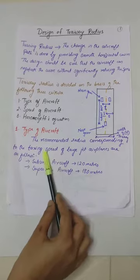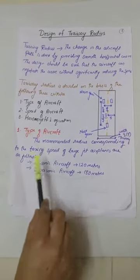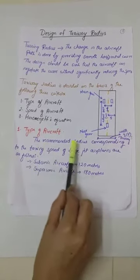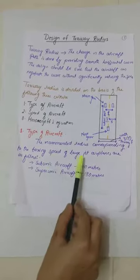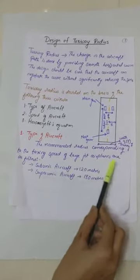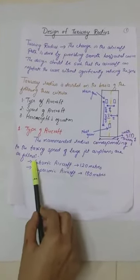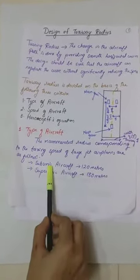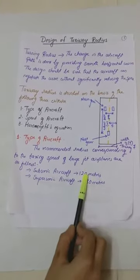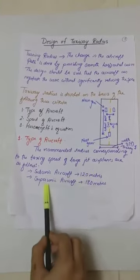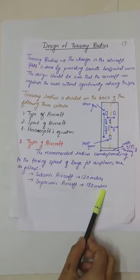As given by International Civil Aviation Organization, the recommended radius corresponding to the taxiing speed of large jet airplanes are as follows. For subsonic aircraft it is 120 meters, and for supersonic aircraft it is 180 meters.